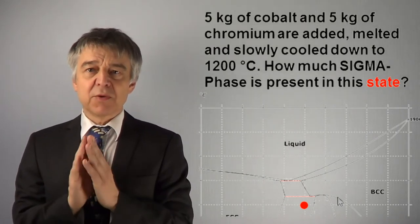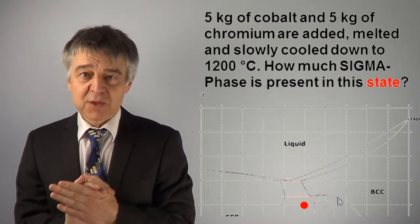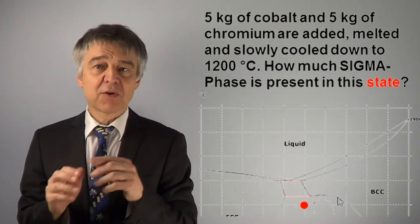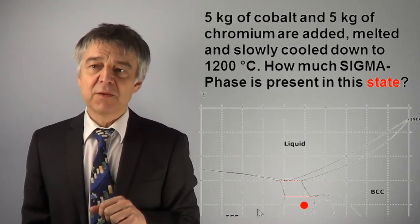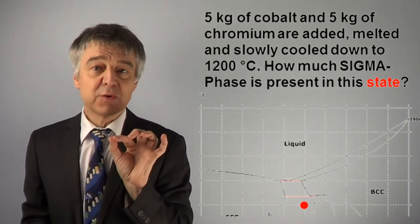The mixture corresponds to a mass fraction of 0.5 at 1200°C. The state of our system thus corresponds to the marked red point, which is located in the heterogeneous area.